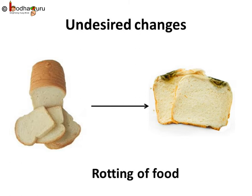Similarly, rotting of food or food becoming stale is also an undesirable change, as it spoils the nutrition in food and makes food inedible — that is, not useful for eating. We know food is valuable. Can we stop this change? When we learn about changes, we must learn how to stop undesired changes which cause loss for us.